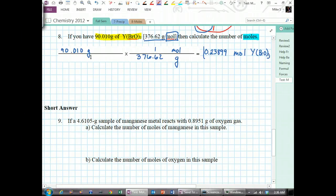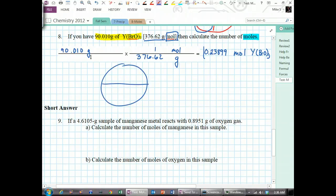And you can use the circles for this. If you're using the circles, you are given that you have grams, 90.010 grams of yttrium hyperbromite, and you're trying to get to moles.